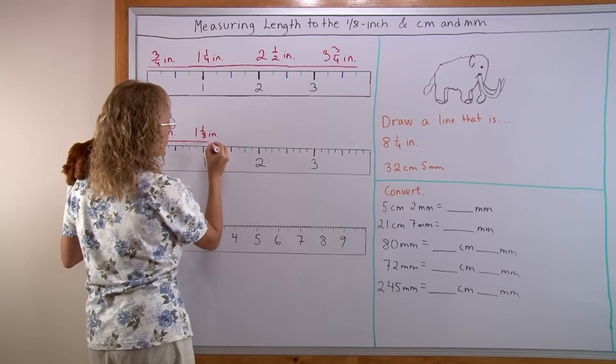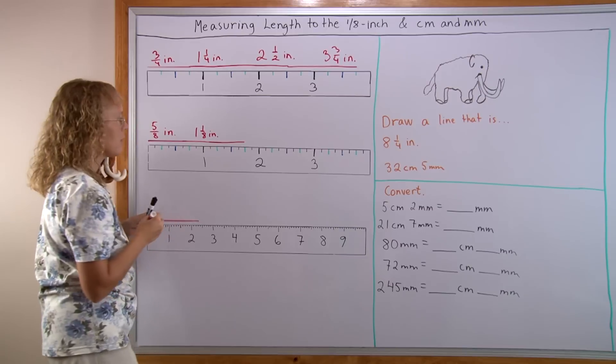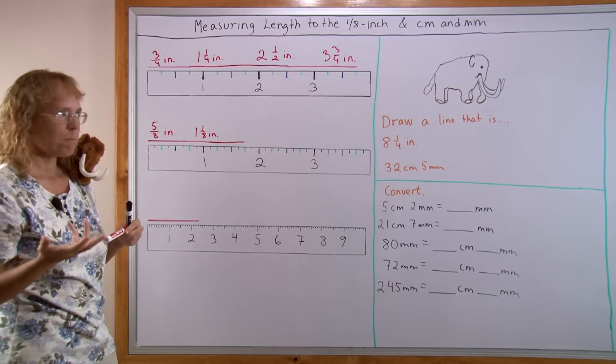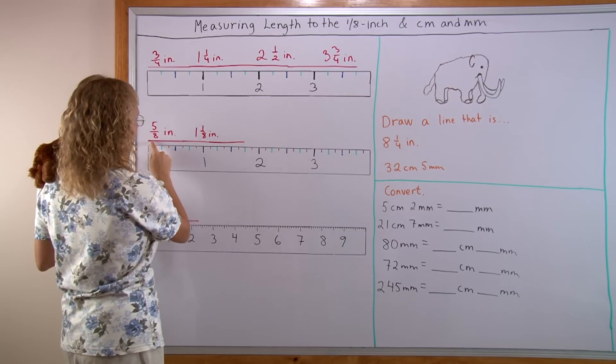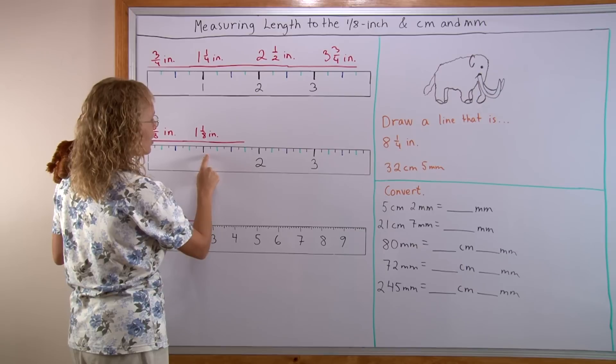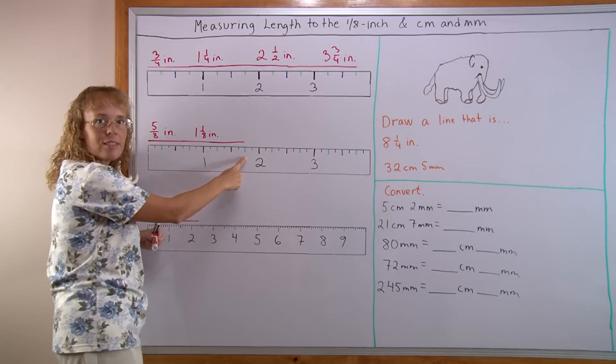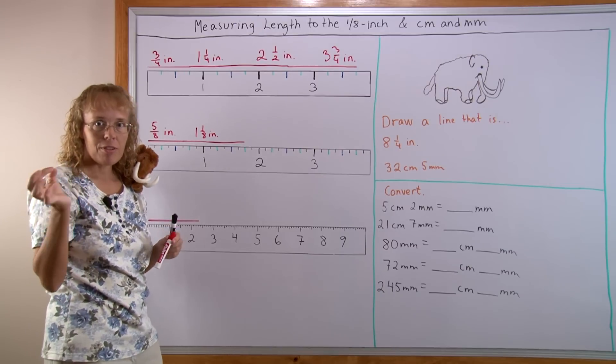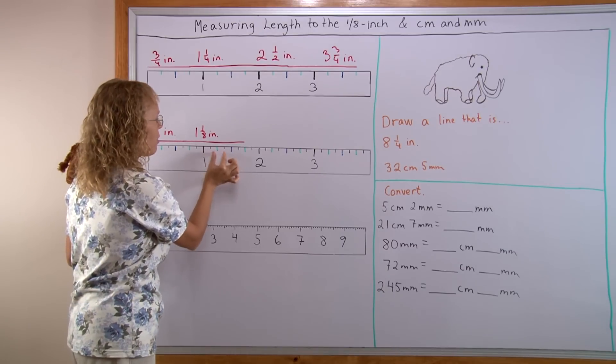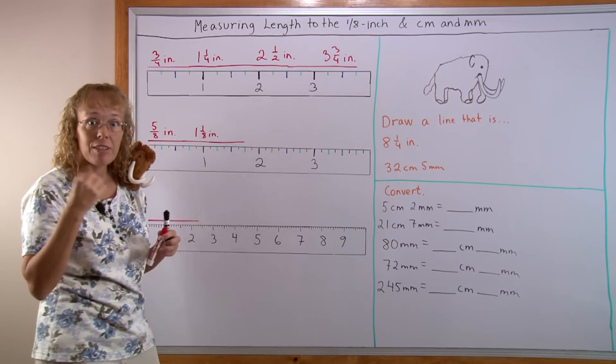And let's say it goes over here. We have 1 inch and then the green mark here. It was for the 1/4 inch increments. So we have 1/4, 1/4, 1/4 or 3/4.